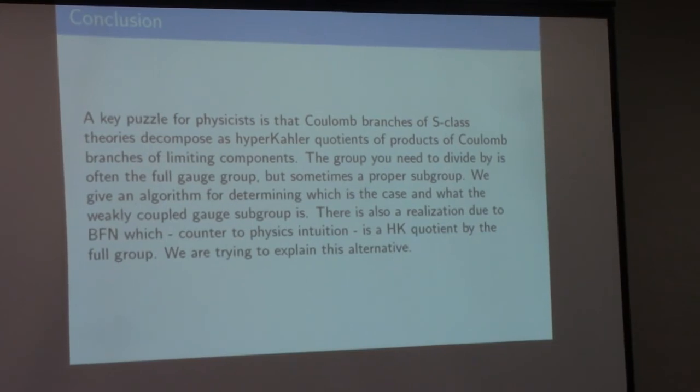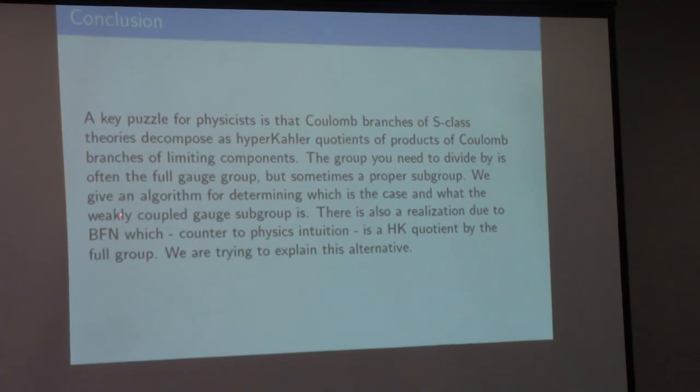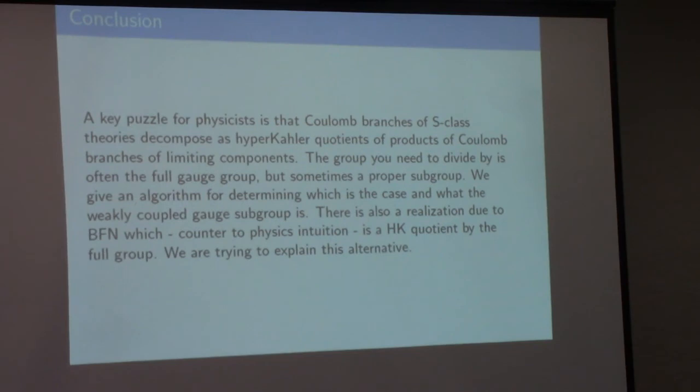Let me just conclude. A key puzzle for the physicists is that the Coulomb branches of the S-class theories is composed as hyperkähler quotients of products of Coulomb branches of the components. The group you need to divide by is often the full group, but sometimes a proper subgroup. We give an algorithm for determining which is the case and what the subgroup H is. There's a realization due to BFN - that's Nakajima, Finkelberg, and Braverman - which, counter to the annotation of my physicist friends, tells me you can also get it as a hyperkähler quotient by the full group. So you can get the same Higgs branch as a hyperkähler quotient in two different ways. One is you follow the recipe here, dividing by H. They have a different recipe where they start with a larger hyperkähler quotient and divide by the full J. At the moment, it's very mysterious why the two quotients are the same.